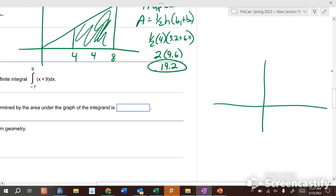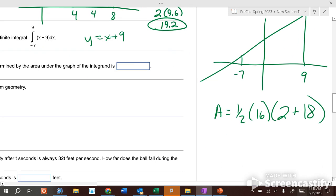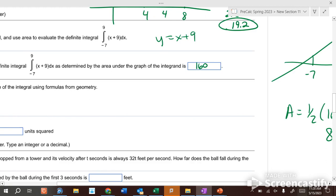x plus nine. x plus nine has a slope of one and a y-intercept of nine, so it kind of goes like this. We're going from negative seven to nine. It's a trapezoid. How far is it from negative seven to nine? 16. Area is one half the height, which is 16, times base one plus base two. If we put negative seven in here, we get two. Nine plus nine is 18. Those are the two heights of these two lines, which are the lengths of the two bases. So half of 16 is eight, two plus 18 is 20, so we get 160.